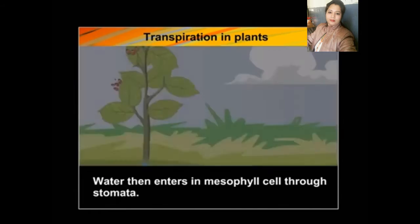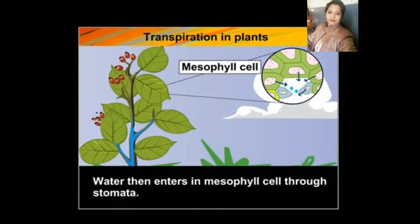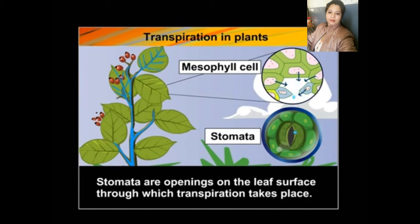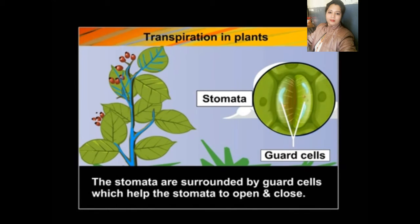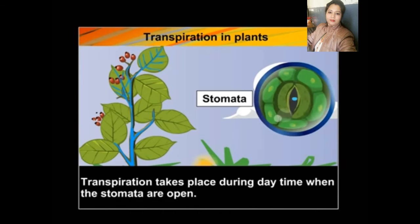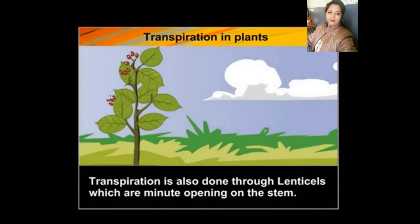Water then enters the mesophyll cells through stomata. Stomata are openings on the leaf surface through which transpiration takes place. The stomata are surrounded by guard cells, which help the stomata to open and close. Transpiration takes place during daytime when the stomata are open.